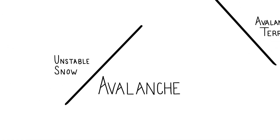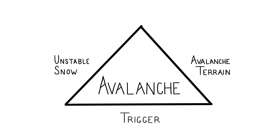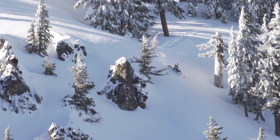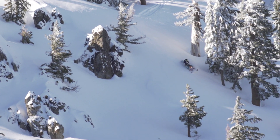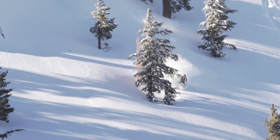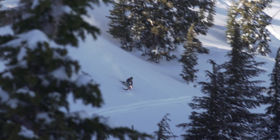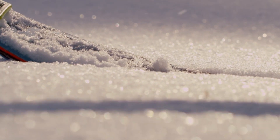You need three ingredients to have an avalanche: unstable snow, a trigger, and avalanche terrain. Removing any one of these ingredients eliminates the possibility of an avalanche. We can't influence the stability of the snow, and if we are in the mountains we can assume we can always be a trigger. So choosing where we go is our primary tool for managing avalanche risk.